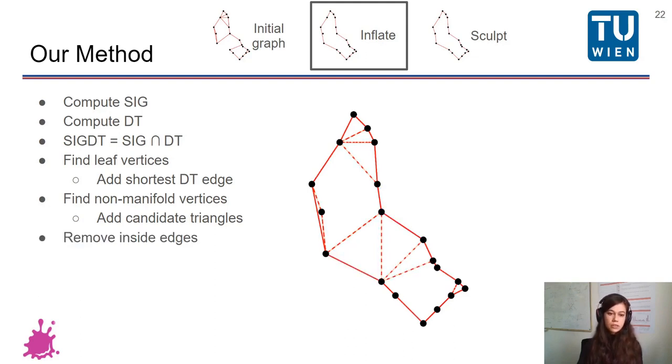However, we are left with a lot of inside edges that we don't actually need for our boundary. So we just get rid of them in another step. Now our shape contains all the points on the outside or inside of the boundary. So we can continue with sculpt.